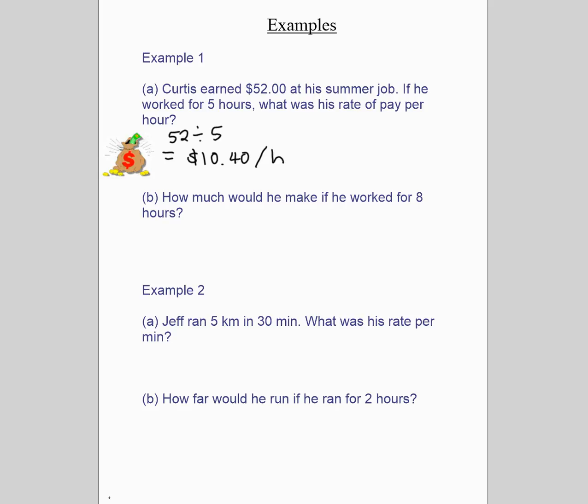Then it says how much would he make if he worked for eight hours? One thing that you can now do is take the unit rate, $10.40 in one hour, and times it by eight hours and get $83.20. Another thing that you could do is set up a proportion. You could say $52 in five hours is X dollars in eight hours, then cross multiply and divide. You can choose what way you like better. Often people like using a unit rate better, but it's totally up to you and personal preference.